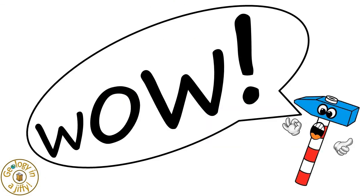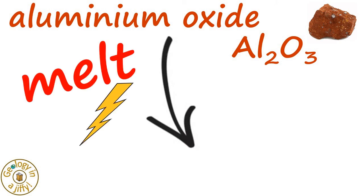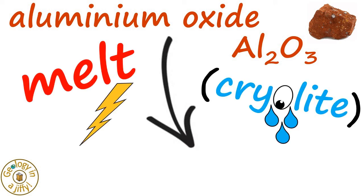Wow! So from aluminium oxide, when we melt and electrolyse it and add cryolite, we can extract pure aluminium and oxygen.